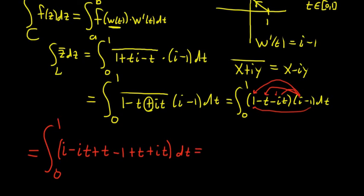This is equal to the definite integral from 0 to 1. So does anything cancel here? Well, yes, the i t's go away, so we're left. And we can combine some terms here. So we have i minus 1, and then we have t and t, so we have 2t. And we're integrating with respect to t.